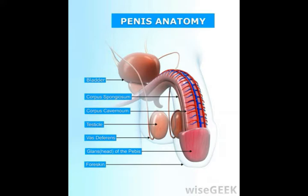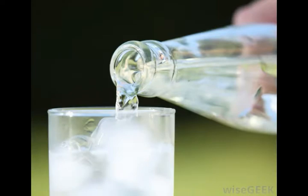Sometimes the term also includes the genitals, the groin, the hips, and the lower abdomen. Loin is used to describe this part of the anatomy in humans, primates, and many species of four-legged mammals, including cattle and horses.